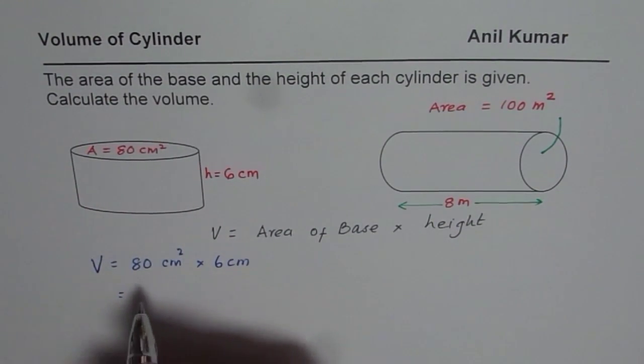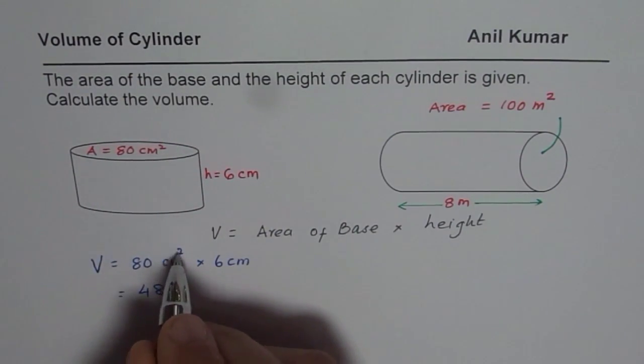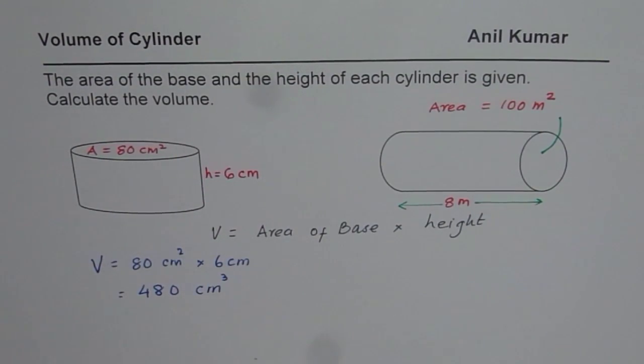And what we get here, 8 times 6 is 48, 1, 0. And centimeter square times centimeter will give you centimeter cube. So the volume is 480 centimeter cube.